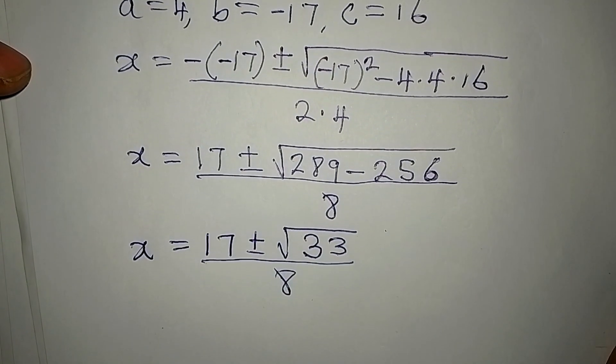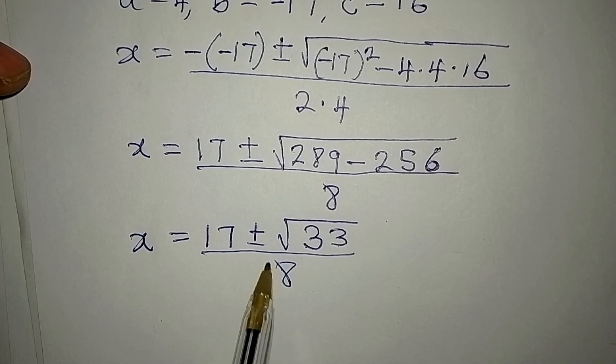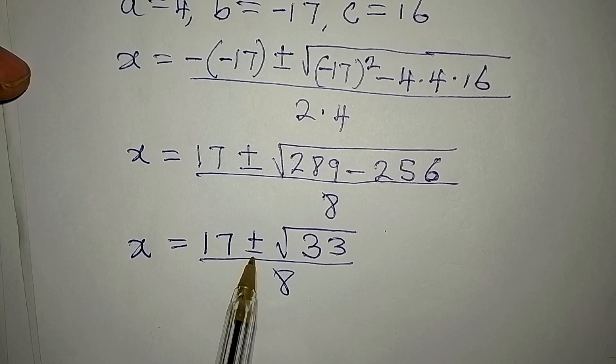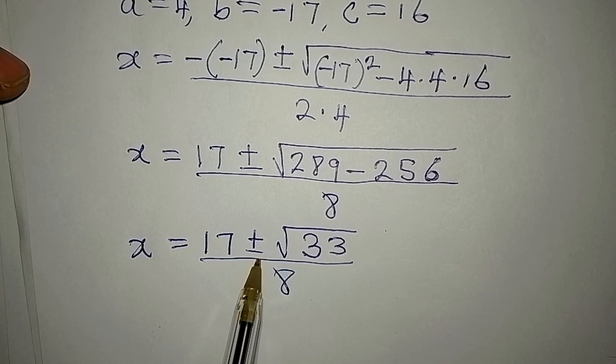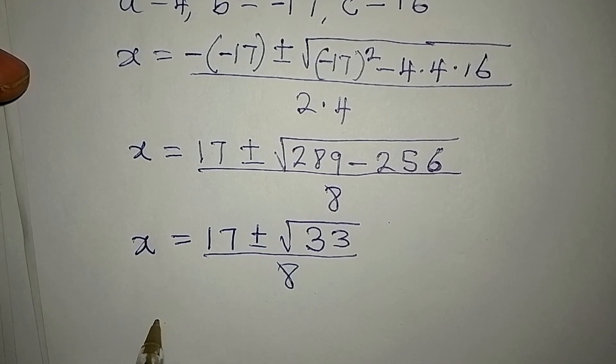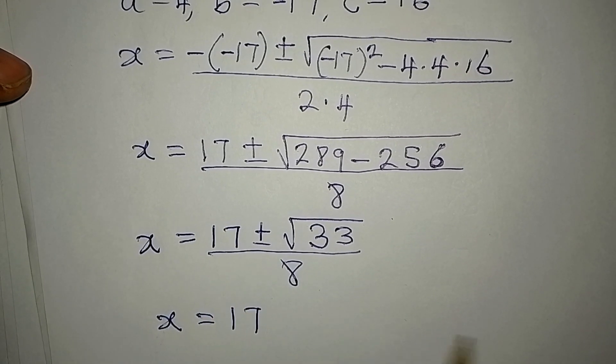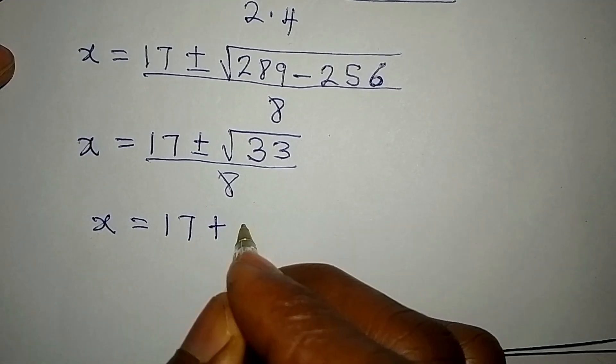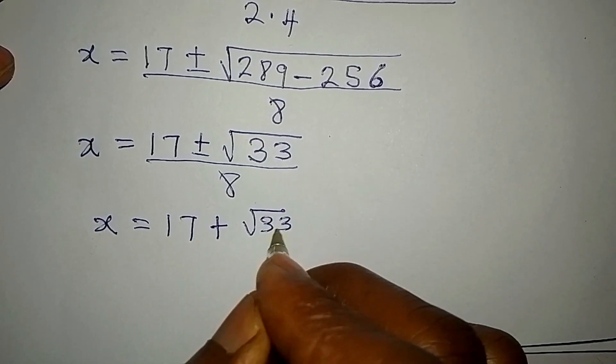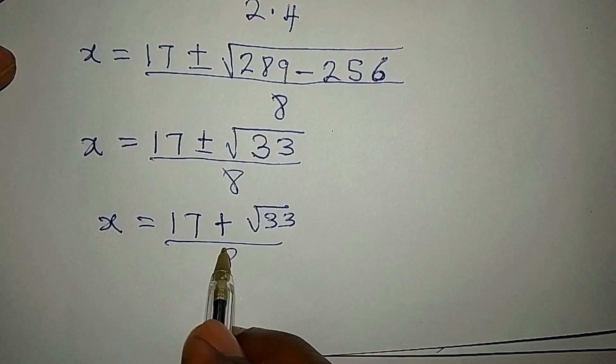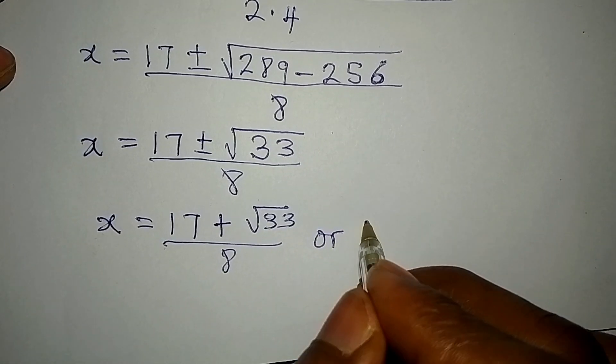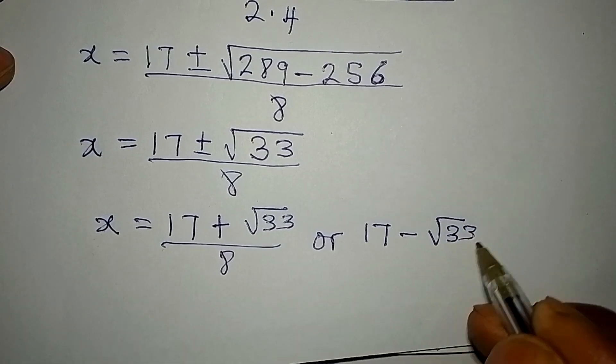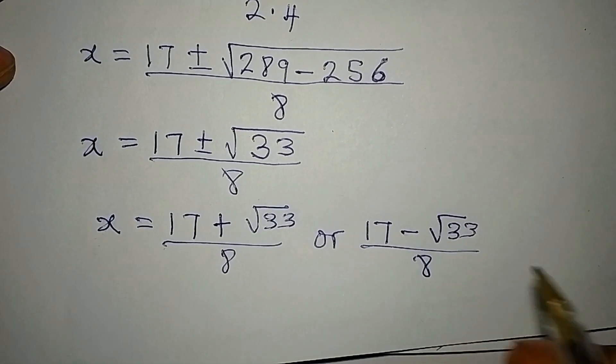And then remember that this is a 2-in-1 solution because we are going to have positive and negative over here. So, our x is equal to 17 plus square root of 33 over 8, or we have 17 minus square root of 33 over 8.